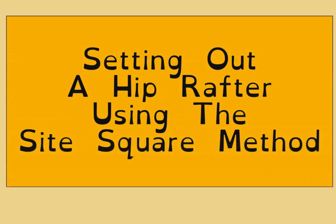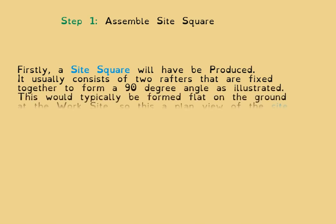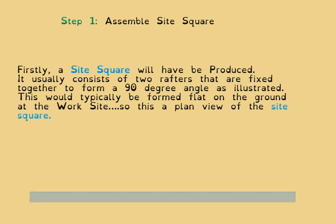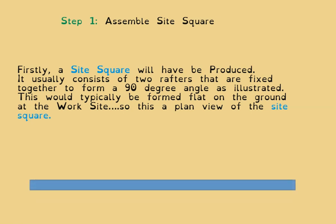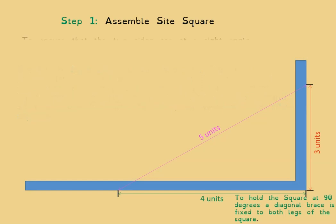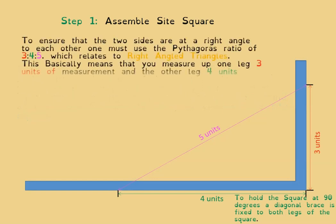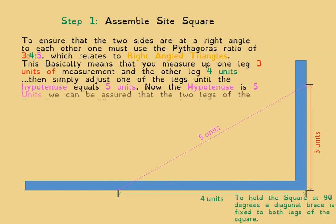We're going through the approach to setting out a hip off a site square, sometimes referred to as a builder's square on site, which is basically two rafters placed against each other to form an L. That L needs to be 90 degrees, and here in this illustration you can see we're using the Pythagoras theorem.